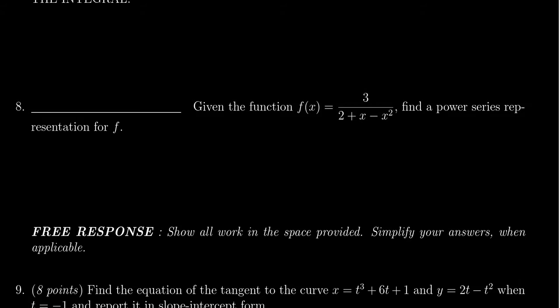In this video, we're going to discuss the solution of question 8 for the final exam for Math 1220, in which case we're given the function f(x) equals 3 over 2 plus x minus x squared, and we're asked to find a power series representation for f.